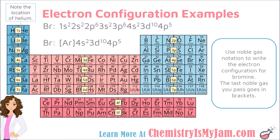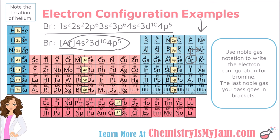This all seems rather tedious — surely there must be a shortcut, and there is. We call it the noble gas configuration. For bromine, instead of writing the full configuration, you find the last noble gas you pass before reaching bromine on the periodic table, which is argon. You put argon in brackets, and then continue the electron configuration starting with the element after argon, which is element 19.